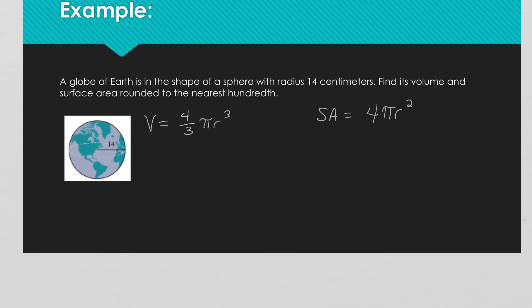For this problem, a globe of the earth is in the shape of a sphere with a radius of 14 centimeters. Find its volume and surface area rounded to the nearest hundredth. Volume is 4/3 times 3.14 — remember we rounded — times 14 cubed. Typing it in: 4/3 times 3.14 times 14 raised to the third power.